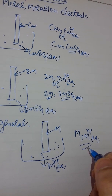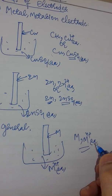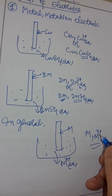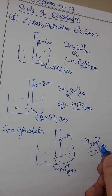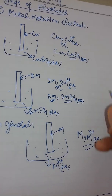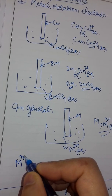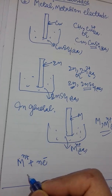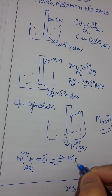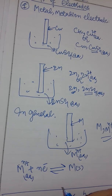If the valency of the metal is n, this n can be different depending upon the metal. Now, what is the electrode equation for this electrode? The general electrode equation is: M^n⁺ (aqueous) + n electrons → M (solid). This is the general equation for this electrode.